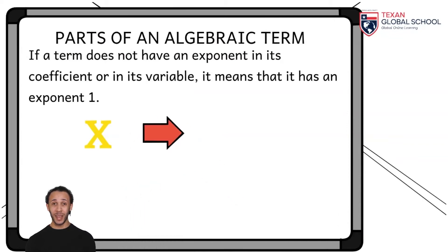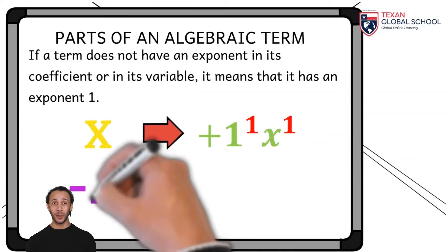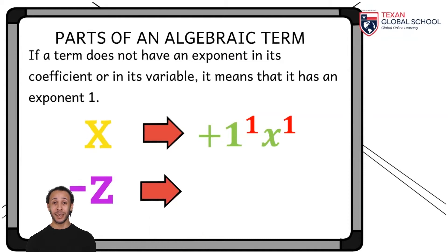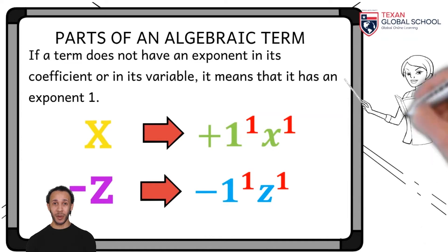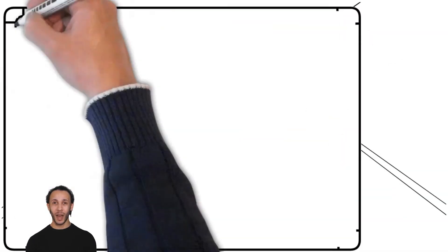Also, if a term does not have an exponent in its coefficient or its variable, it means that it has an exponent 1. The variable x has a numerical coefficient of 1, a positive sign, and its base is raised to the first power.